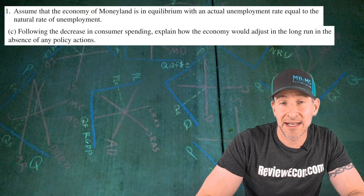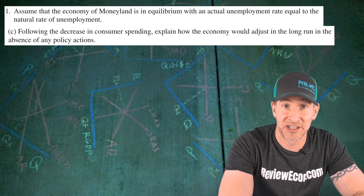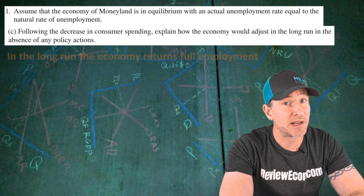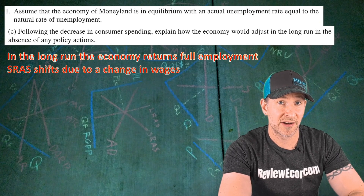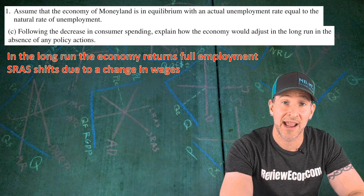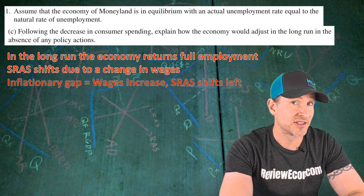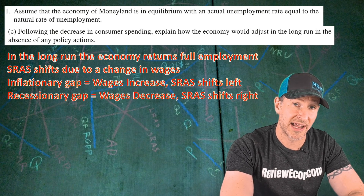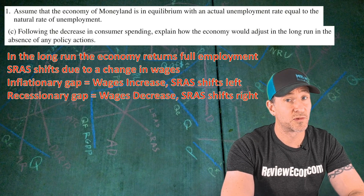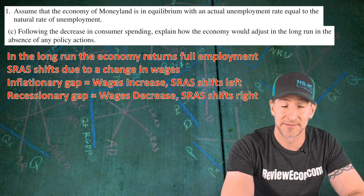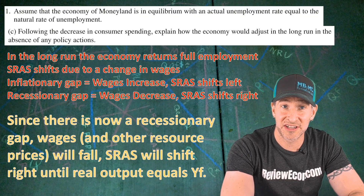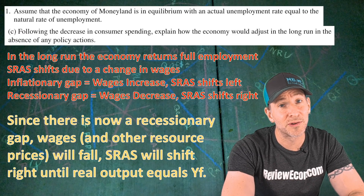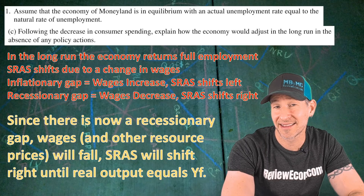For part C, we're asked how the Moneyland economy will adjust in the long run after the change in consumer spending with no policy actions taken. In the long run the economy returns to full employment because the short-run aggregate supply curve shifts due to changes in wages and other input prices. When there's a recessionary gap, wages and other resource prices decrease and SRAS shifts to the right. Since there is now a recessionary gap, wages and resource prices will fall, and SRAS will shift right until real output equals YF.